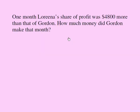One month, Lorena's share of profit was $4,800 more than that of Gordon. So one month, Lorena made $4,800 more than what Gordon made. How much money did Gordon make that month?